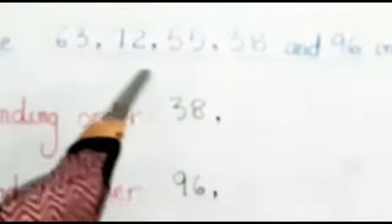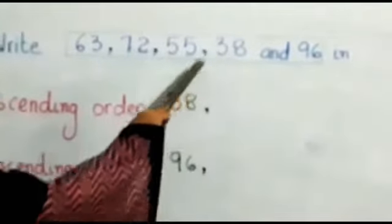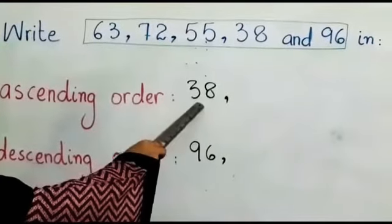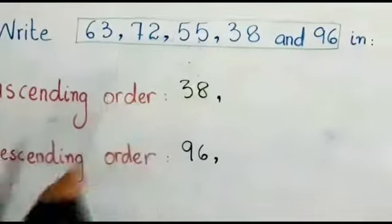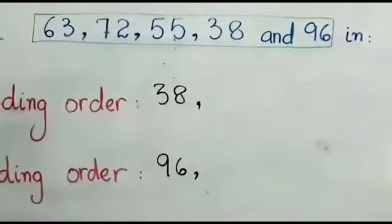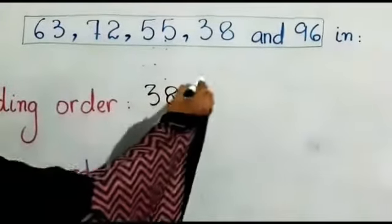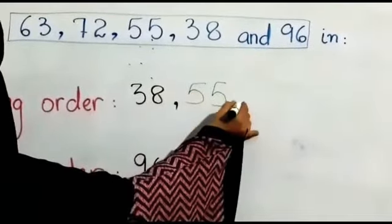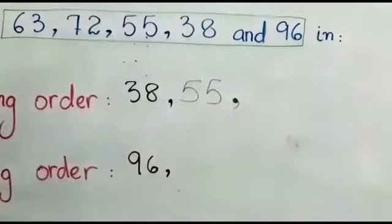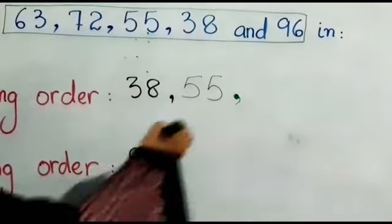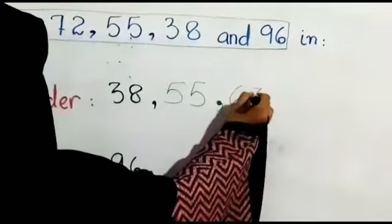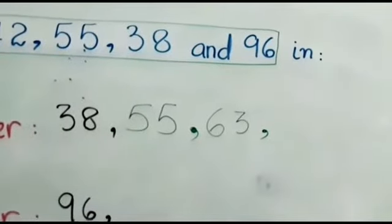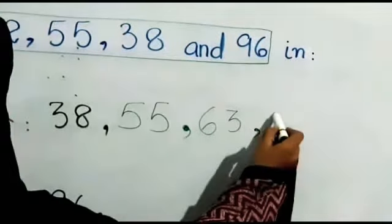So first we have to write the smallest number from this group. From this group, we take 38 because 38 is the smallest. Now after 38, which number is greater? After 38, 55 is greater. After 55, which number is greater? 63. After 63, it is 72.